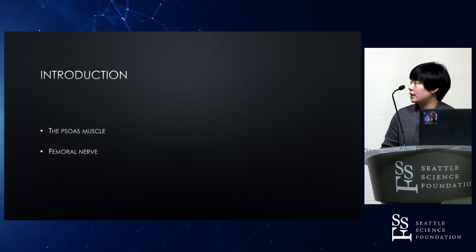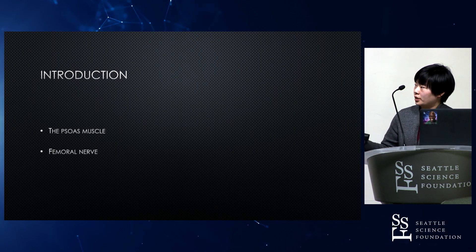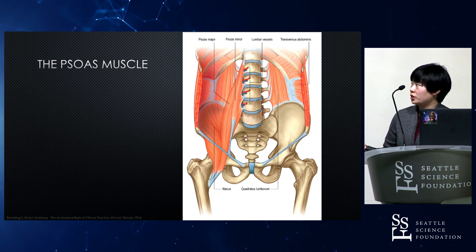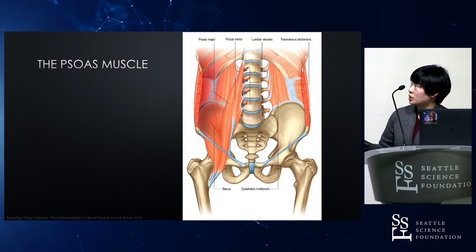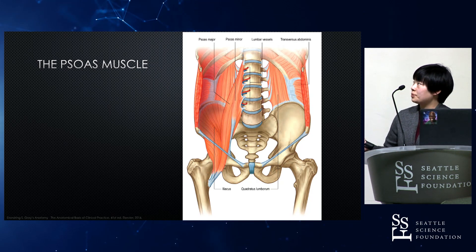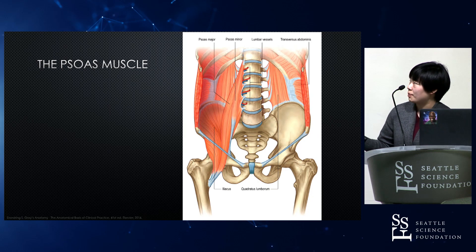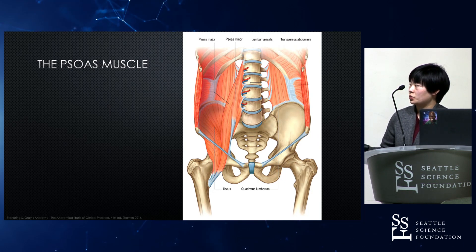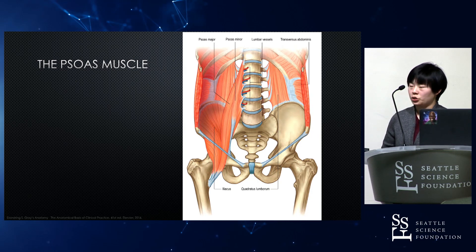For the introduction of my presentation, I will start with the psoas muscle and femoral nerve introduction. The psoas muscle is the major flexor of the hip joint. The psoas major has a proximal attachment of T12 to L5, including the intervertebral disc. It also has a psoas minor, and in this area it will fuse with the iliacus muscle tendon, go through the inguinal ligament, and attach to the lesser trochanter of the femur.